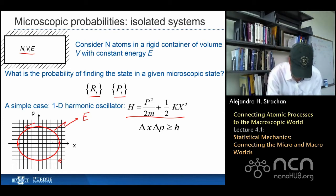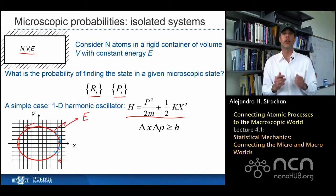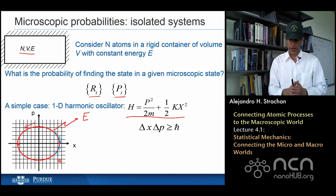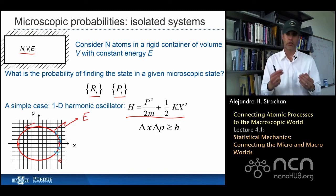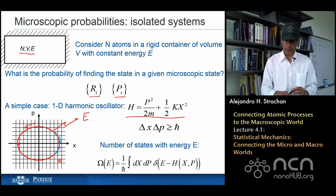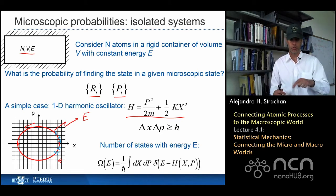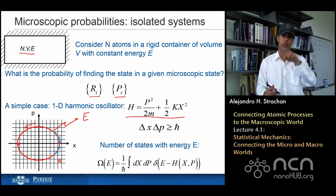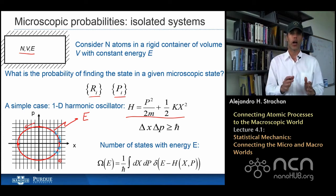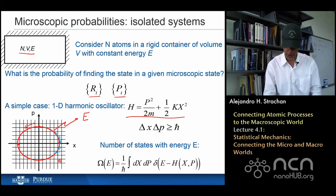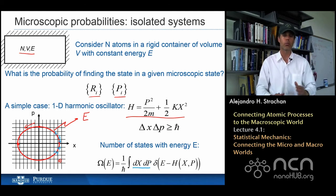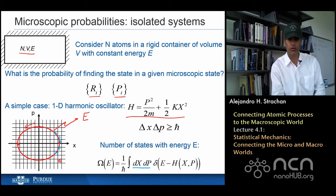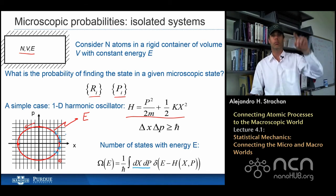That just simplifies the math a little. Before answering the question of what is the probability of finding the system at a given state, I'm going to define the number of states of the system — I'm just going to count how many states I visit as the system goes around. Mathematically, I integrate over all possible positions x and all possible momenta p everywhere.